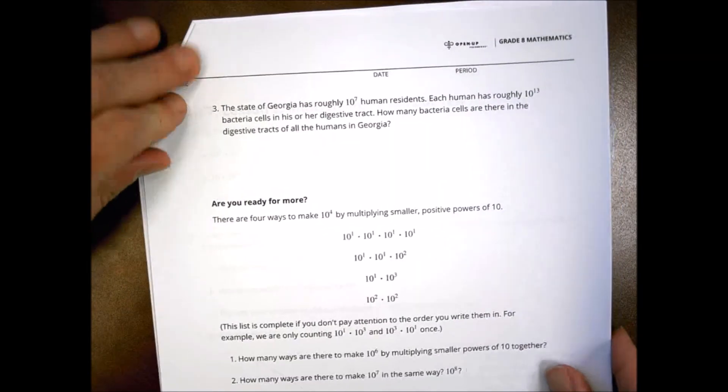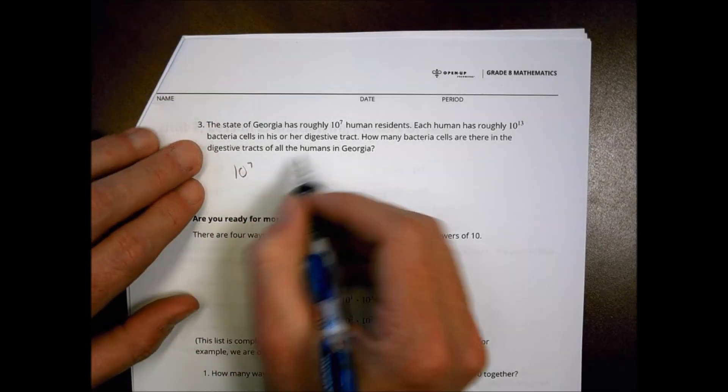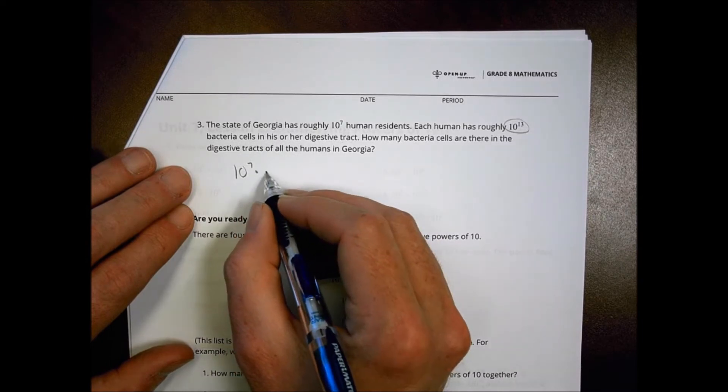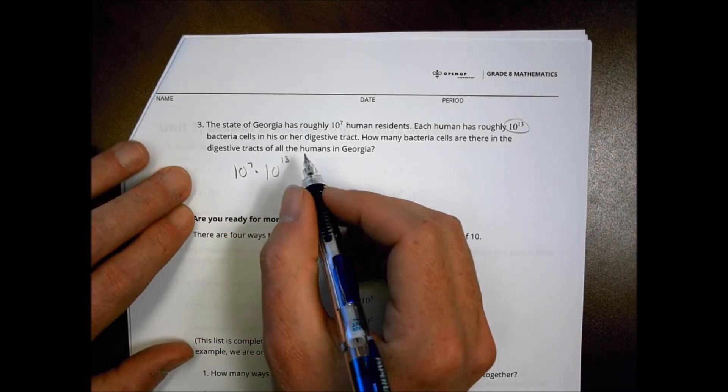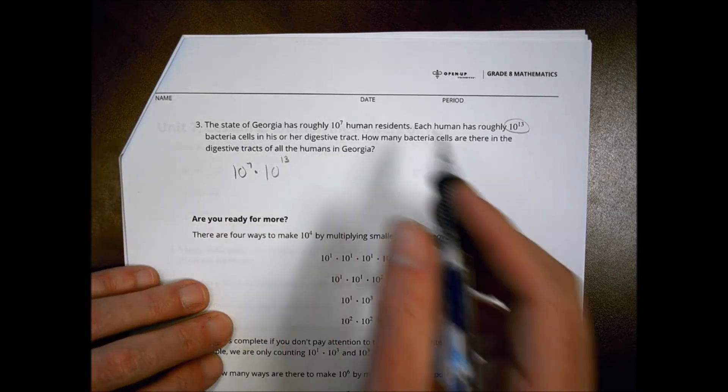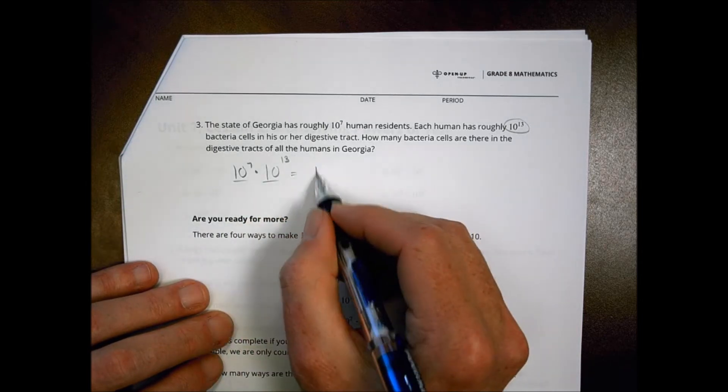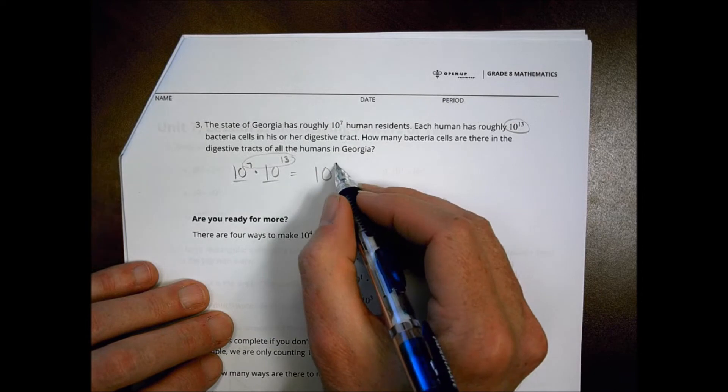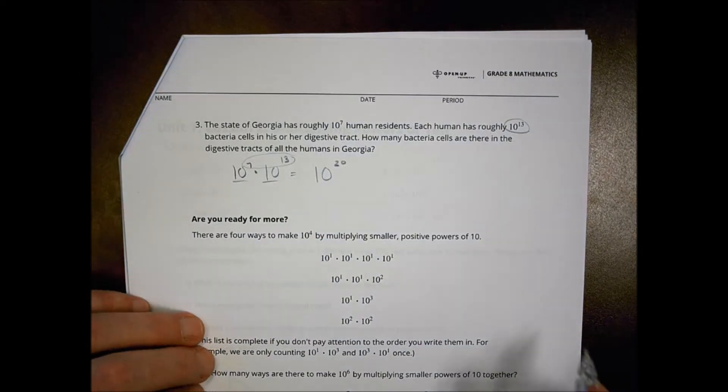The state of Georgia has roughly 10 to the seventh human residents. Each human has 10 to the 13th bacteria cells in their digestive tract. How many are there in all the humans in Georgia? Again, the same basis, so the base stays the same and we can add the exponents. Seven plus 13 is 20 and we can leave it just like that.